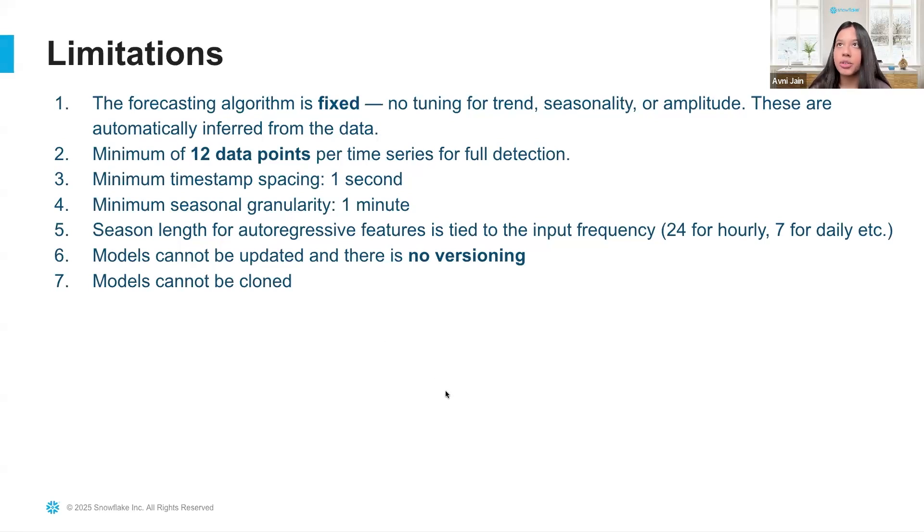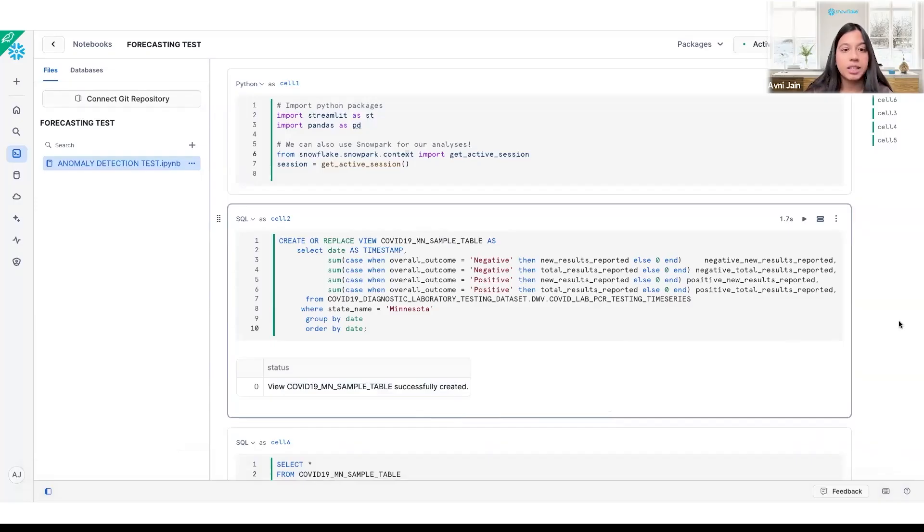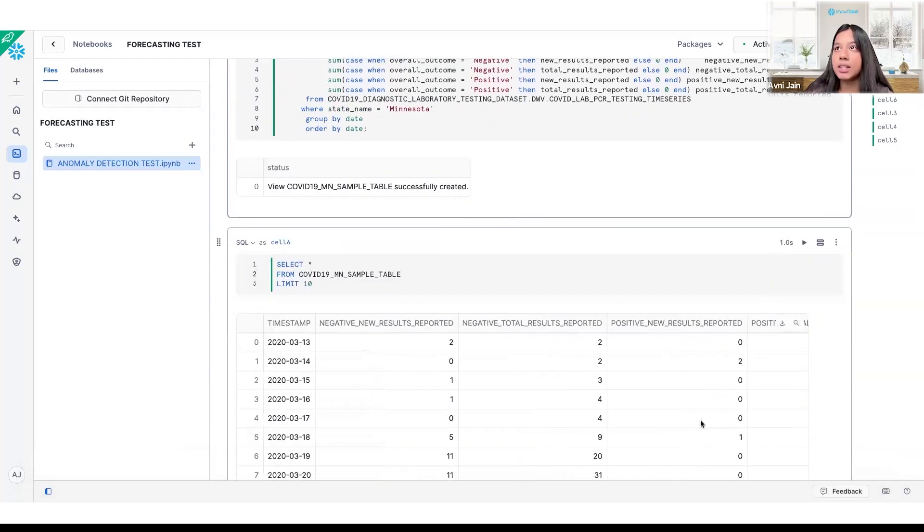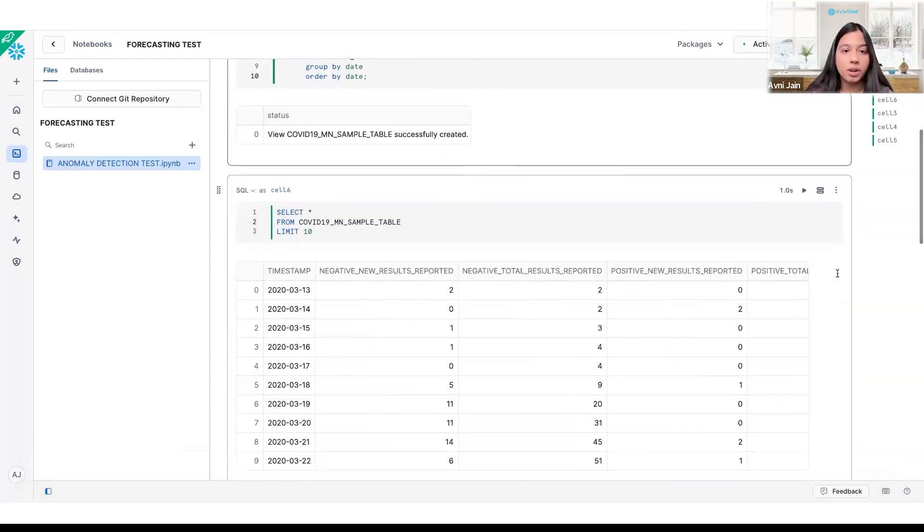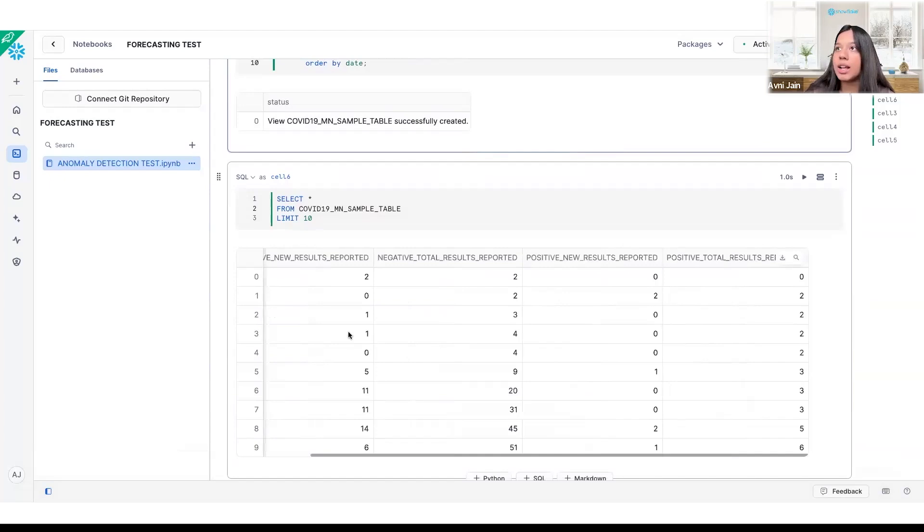Now let's go over a quick demo. For our sample in the demo, we've selected the COVID-19 sample table which contains the positive and negative reported results each day. What's really important to note here is that we have our timestamp column which you'll need for any of these time series models as well as some target columns. For this, I'm specifically interested in forecasting how many positive test results there are each day after my training period.